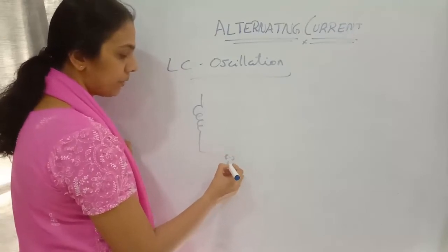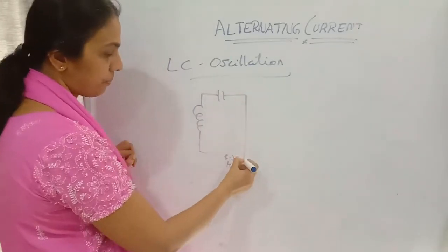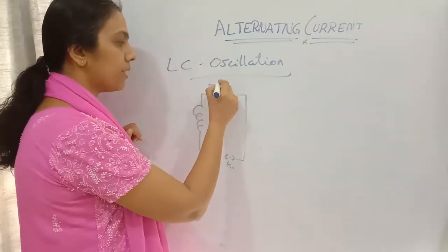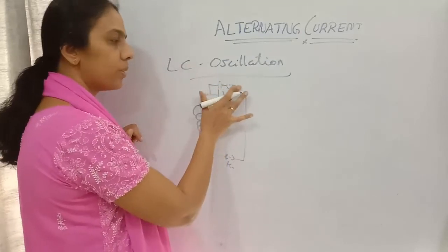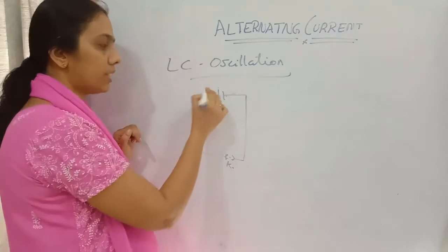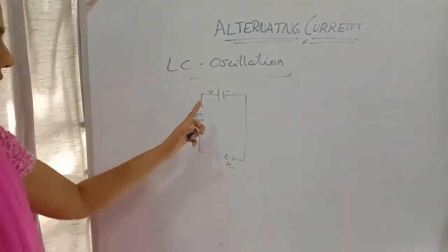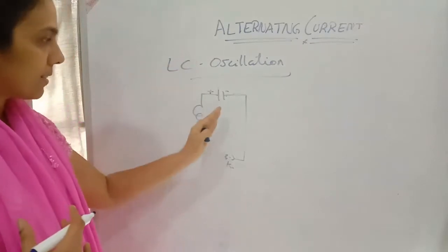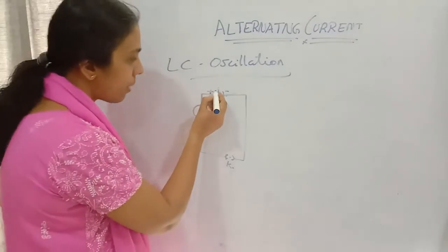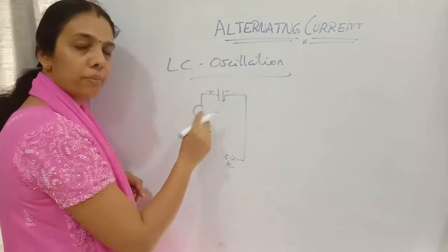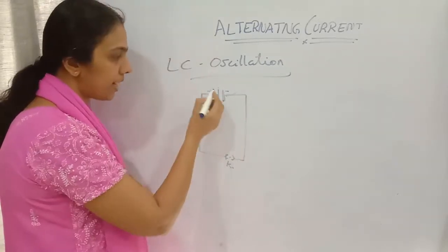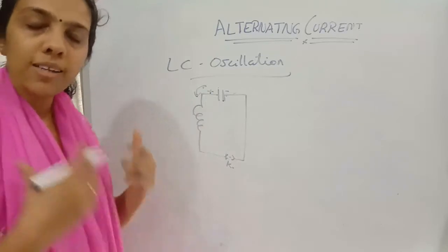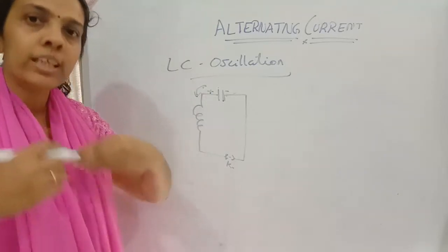We start with a charged capacitor — positive charges on one plate, negative charges on the other. We can charge it using a cell and a key. When we connect the charged capacitor to the circuit, discharge will start. Current will pass from the capacitor to the inductor; as it passes through the inductor, the current slowly increases.